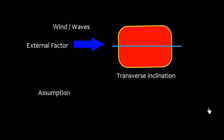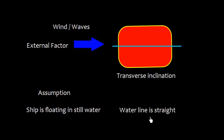However, there are some assumptions and this assumption is that the ship is floating in still water. We can understand here that this is the water line and this water line is a straight line. That's why the ship is floating in still water and the water line is represented as a straight line.